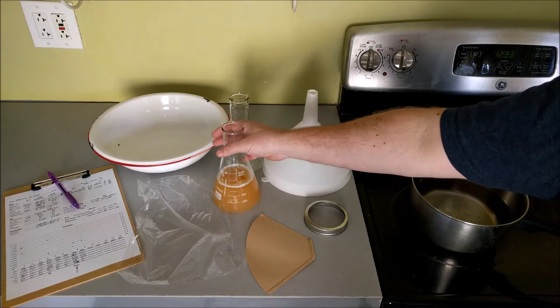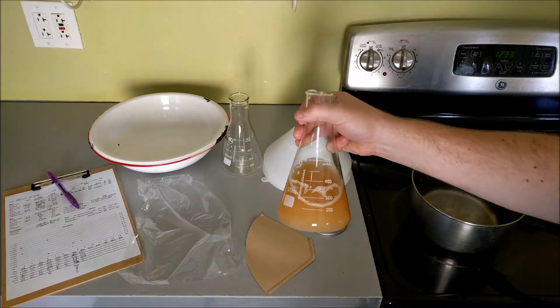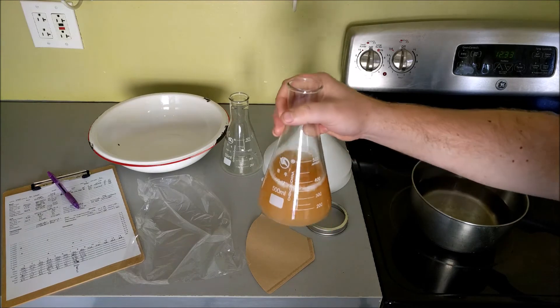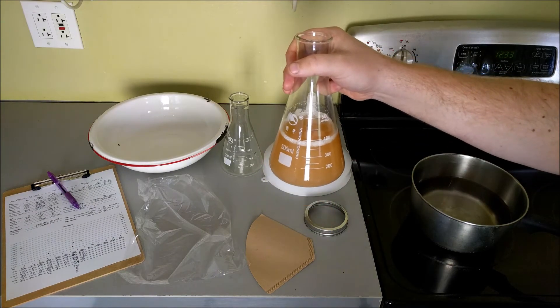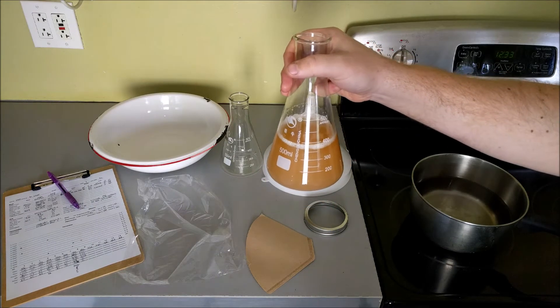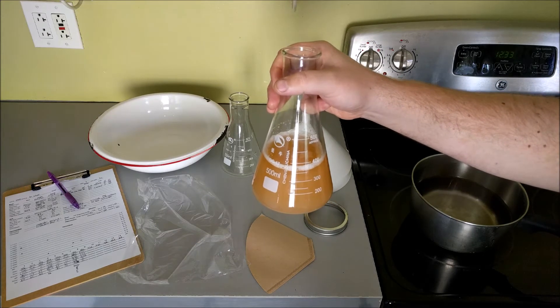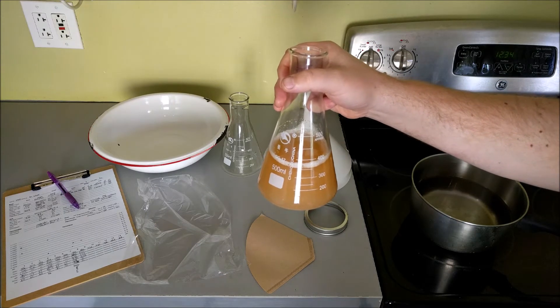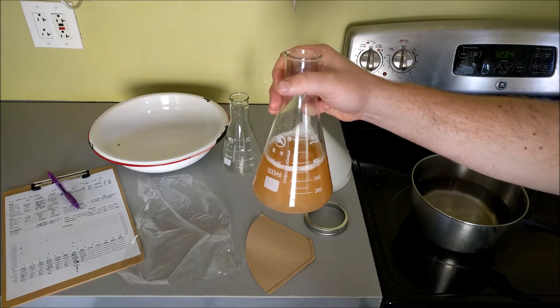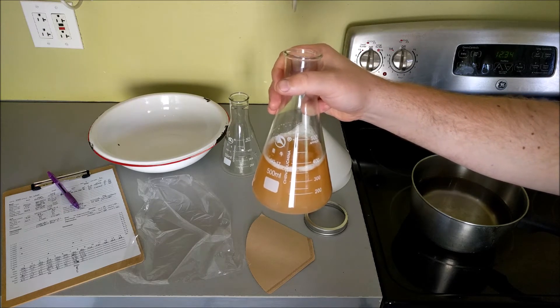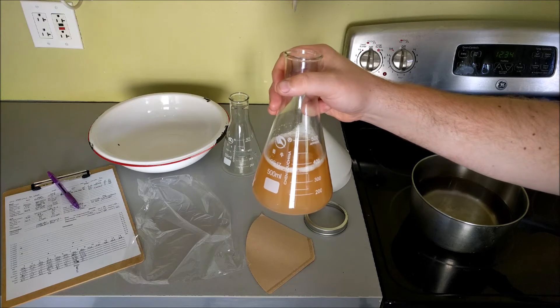To do the test, you'll need a small sample of whatever's fermenting. I pull a larger sample because I'm going to do a pH and gravity reading at the same time, but you might pull something like 200 milliliters. It doesn't take very much. Keep in mind you will need to split it, so you need enough to basically fill a fair portion of whatever two vessels you're putting it in.